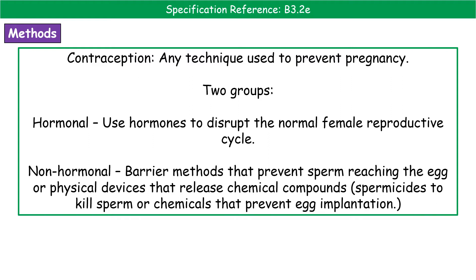When we're talking about contraception, this is basically a technique that we use to try to avoid pregnancy, and this falls into two categories. You can either have hormonal contraceptives, which are using hormones to disrupt those cycles, or the non-hormonal methods, which are basically barriers that prevent the sperm from reaching the egg.